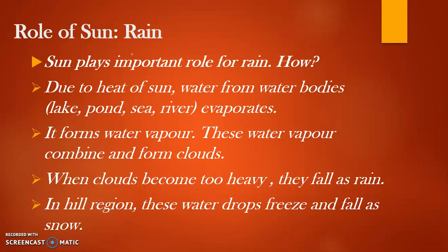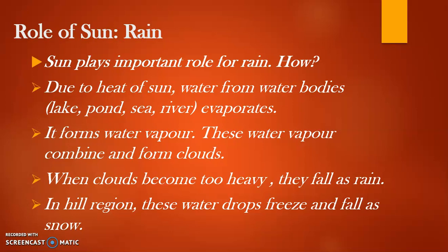Now, the role of the Sun for rain. The Sun plays an important role for rain also. Due to heat, water from water bodies - lakes, ponds, seas, rivers - evaporates and forms water vapor. These water vapors combine and form clouds. When clouds become too heavy with water, they fall as rain. In hill regions, these water drops freeze and fall as snow - the water vapor goes up, freezes, and starts snowing. This is the water cycle you have also studied in Social Science.